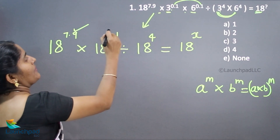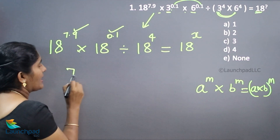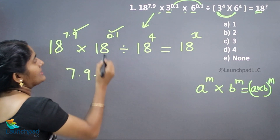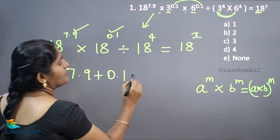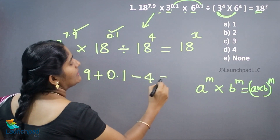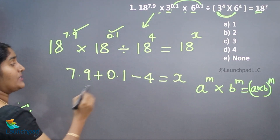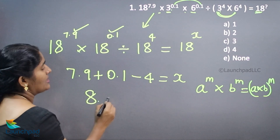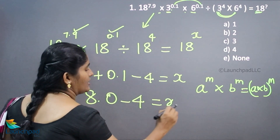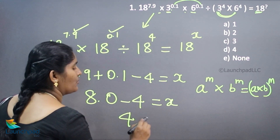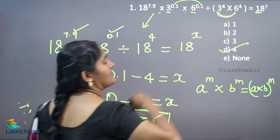Now we want to add all the power values: 18 to the power of 7.9 plus 0.1 minus 4, which is equal to X. So 7.9 plus 0.1 is 8.0, minus 4 is equal to X. Therefore your answer is 4 equals X. So option D is your correct answer.